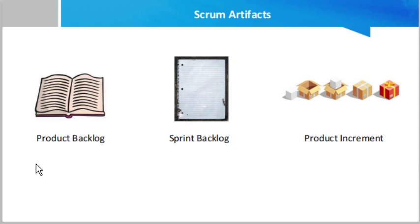A product backlog is a list of all the things that are required in the product. It is a dynamic and best understood set of requirements for any changes to be made to the product. The product backlog is owned by the product owner, and consists of a list of all features, functions, requirements, enhancements, and fixes that constitute the changes to be made in future releases. Typically, requirements keep changing due to changes in business requirements, market conditions, or technology, so the product backlog is consistently updated to reflect what the product needs to be most useful to target users.